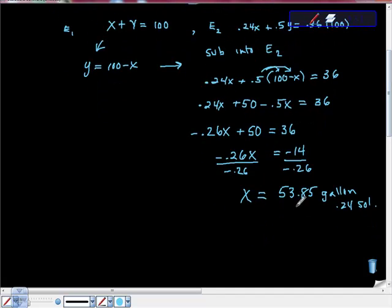We know that when we add these two together, we have to get 100. So 100 minus this gives us that we need 46.15 gallons of 0.50 solution.